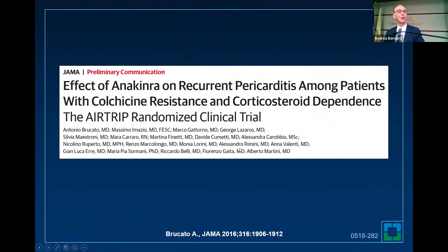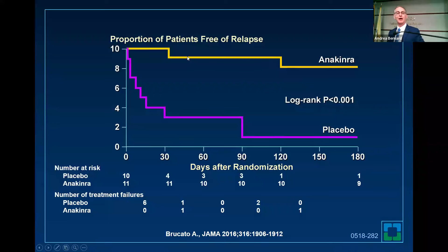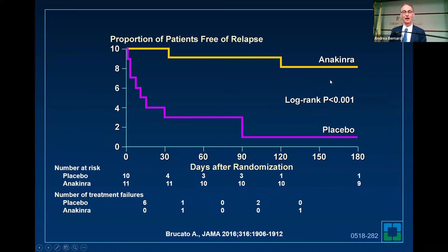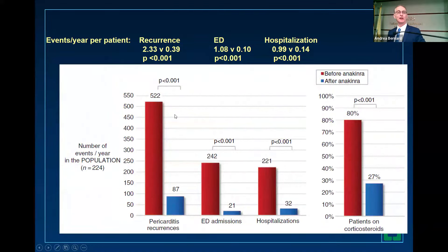The first trial was the AIRTRIP trial from Italy. These trials are not that many patients — 21 patients — where anakinra was very useful, showing compared to placebo that it lowered the number of relapses. This was done initially in children. Anakinra is a short-acting medicine — it's not FDA approved and will never be FDA approved because the company lost its patent and it's off-label. But we did a registry with the Italians showing that if you go on anakinra, you have fewer recurrences, fewer ER admissions, fewer hospitalizations, and you're more likely to get off steroids. You have to give it daily and it seems to be very effective.